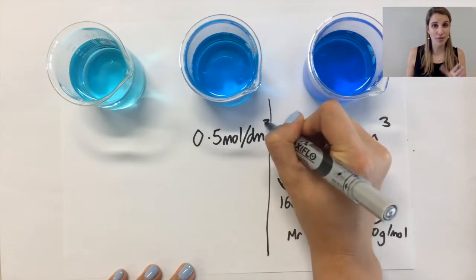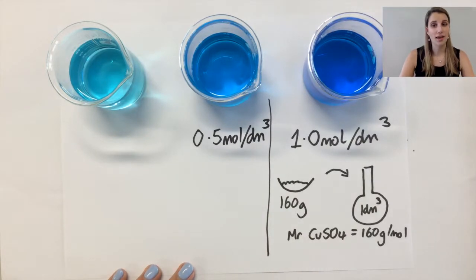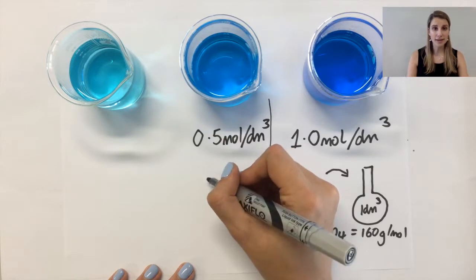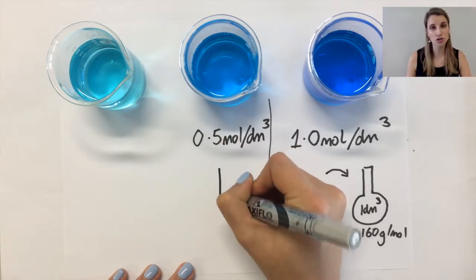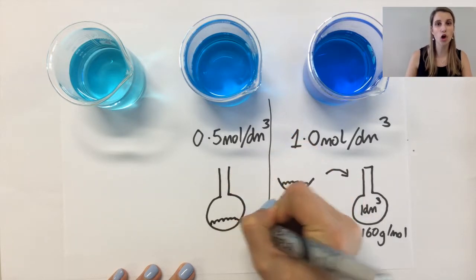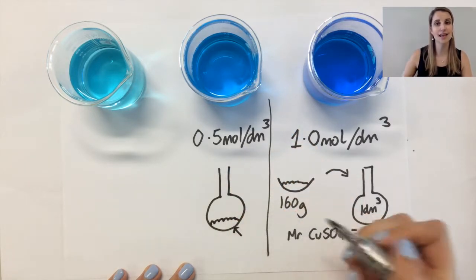The second one, the middle one, is only 0.5 moles per decimetre cubed. So what that means is it's half as concentrated. So that means that now I only need half the mass of copper sulphate in the same volume.